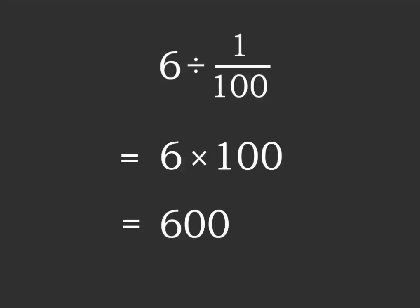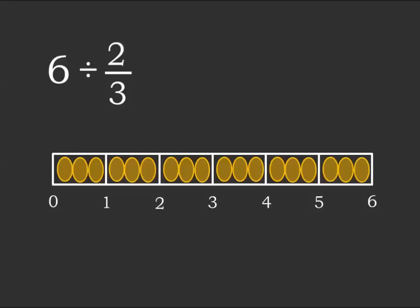Now, what if the number on top of the fraction — the numerator — isn't 1? Here the number on top is a 2. I tell students: ignore the number on top, just think of it as a 1, and first cut the chocolate bar into third-sized pieces. Just do what you did previously. Take your chocolate bar and cut it all up into thirds, and you'll see there are 18 pieces there. Now, 2 thirds of a piece of chocolate is bigger than a third. In fact, to make 2 thirds, you would first cut a piece into thirds, and then you'd have to glue pieces back together.